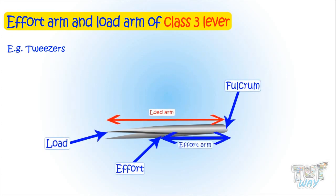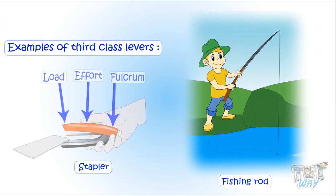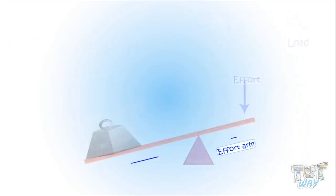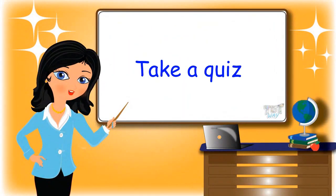The effort arm is much smaller than the load arm in tweezers. Here are more examples of class 3 levers, and in all cases, with effort being in the center, the effort arm is much smaller than the load arm. Today we learned about the effort arm and load arm of different types of levers. Now go ahead and take a quiz to learn more! Bye-bye!